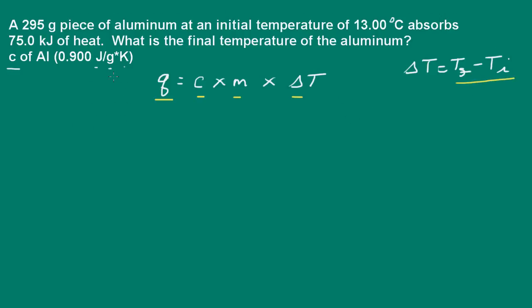So the first thing I want to do is make sure that my mass and temperature are in the appropriate units, and then we need to go ahead and convert our 75 kilojoules of heat to joules of heat. We need to do that because we're going to be using the specific heat capacity, and that is in joules, so our units have to be consistent.